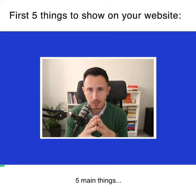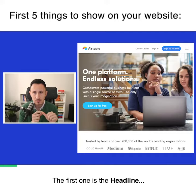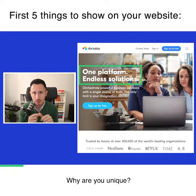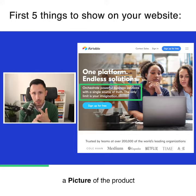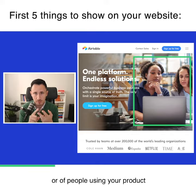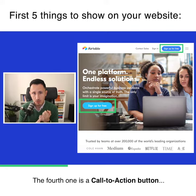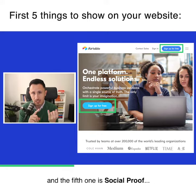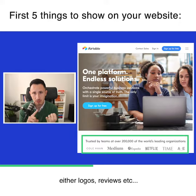Your website header should have five main things. The first one is the headline — why are you unique. The second one is the subtext, explaining how you do what you do. The third one is a picture of the product or of people using your product. The fourth one is a call to action button — what do you want them to do next. And the fifth one is social proof — showing customers who've already used your product and are happy, either through logos or reviews.